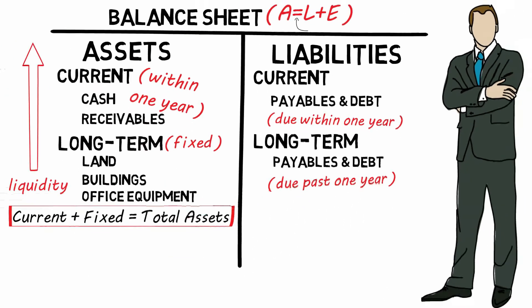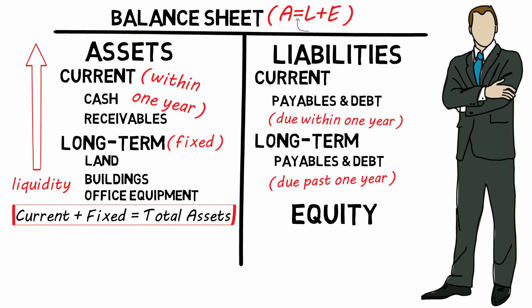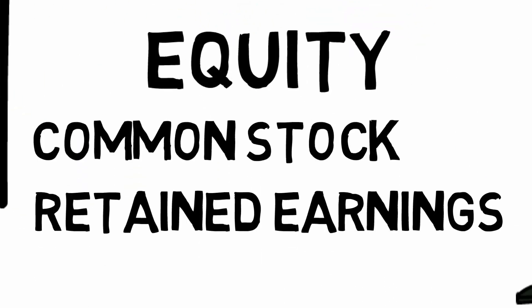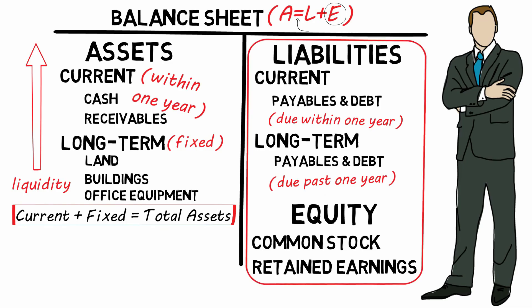Lastly, we're talking owner's equity. With our favorite equation, this is the E. Made of two little things: first, common stock, then retained earnings. Now add all this you see, you get total liabilities and stockholders' equity. There you have it, that's the balance sheet. Just remember A equals L plus E.